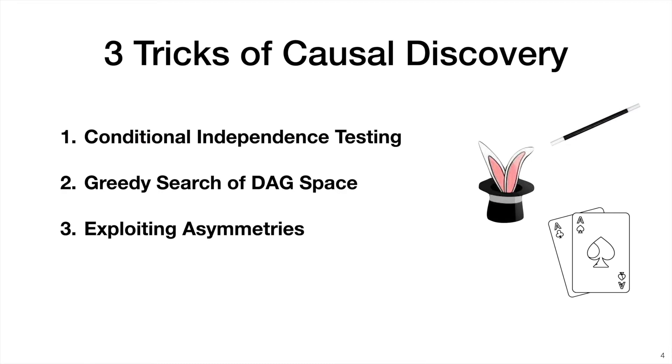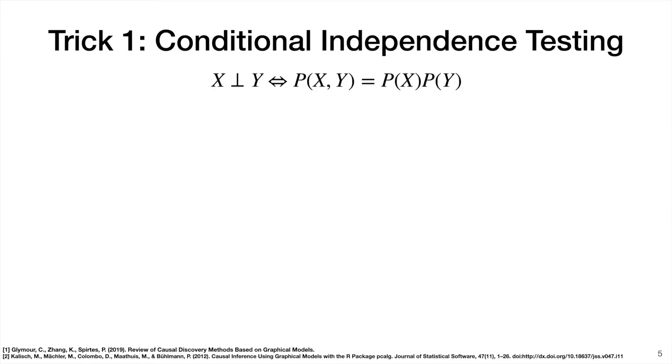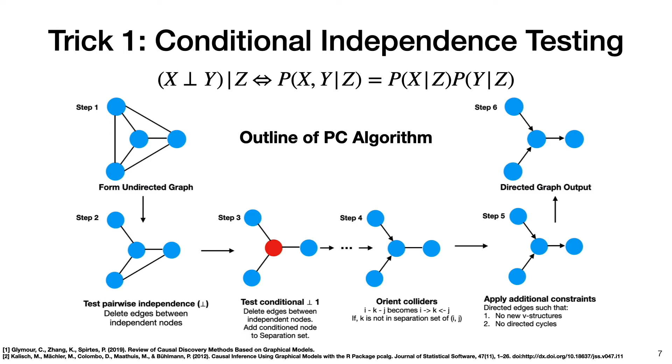Here, I'll talk about three different tricks for causal discovery. The first trick is conditional independence testing. I start here with a definition of statistical independence, which is shown here. In other words, two variables X and Y are said to be independent if their joint distribution is equal to the product of their individual distributions. From this, we can get a definition of conditional independence, which is basically the same thing. However, now we look at distributions of each variable when conditioned on a particular variable, say, Z.